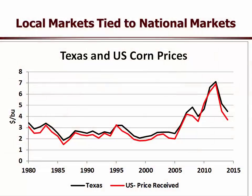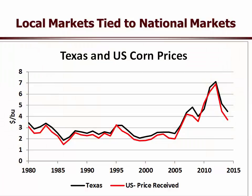How tied are we in Texas to national and world prices? I took this graph of corn price in Texas — the black line — and the US — the red line — and notice how they move together. If the US gets the sniffles in terms of prices, we're going to catch pneumonia. Our prices in Texas are just a little bit higher than the US national average because we feed a lot of cattle and we're corn-deficient. Texas and US prices are dependent on demand and supply factors in what is essentially a free market.